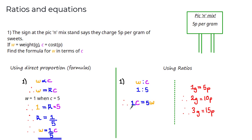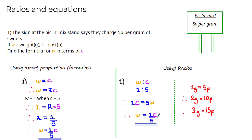Therefore, c = 5 × w (I'll explain writing 1 × c shortly). Dividing both sides by 5 gives w = (1/5) × c — exactly the same formula we got using the direct proportion method.